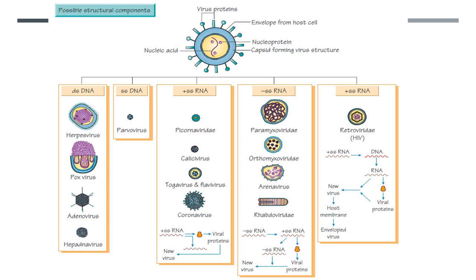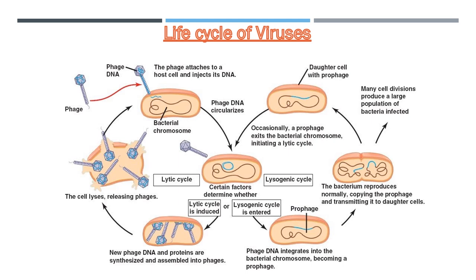For the virus to reproduce and thereby establish infection, it must enter cells of the host organism and use host cell materials. To enter the cells, proteins on the surface of the virus interact with proteins of the cell. The virus particle or its genetic contents are released into the host cell, where replication of the viral genome may commence.